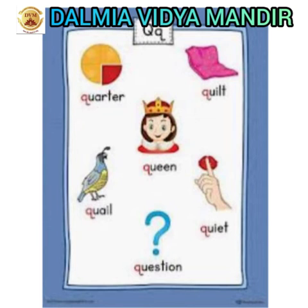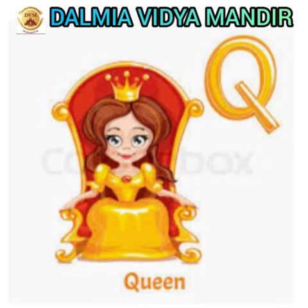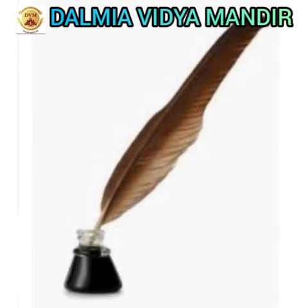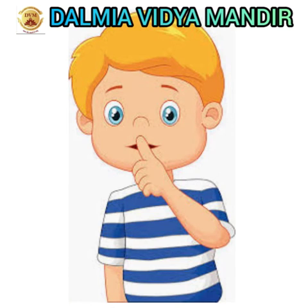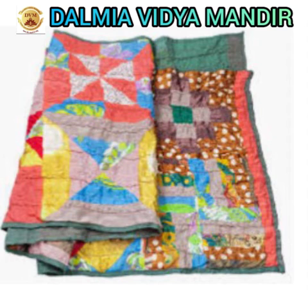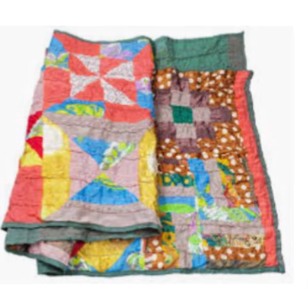Now we are going to learn the objects that start from the letter Q. See here children — Q for queen, all of you say queen. And Q for quill, all of you say quill. Very good. And Q for quiet — quiet means we should not talk, we should be quiet. And Q for quilt, all of you say quilt. Very good.